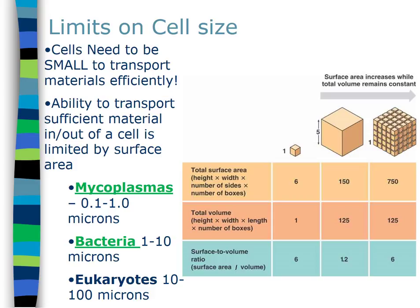If you take that same 5×5×5 volume and divide it into 125 smaller unit cubes, each small cube has a surface area of 6, so total surface area is 750. Total volume is still 125. The ratio is 750/125 = 6 — the same efficient ratio as the original small cube. So cells want to be small to maintain an efficient surface area to volume ratio.